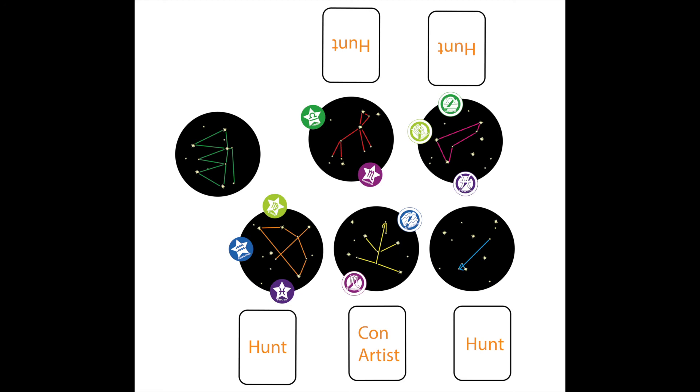Because the head astronomer and Con Artist are on the same team, it is in the head astronomer's best interest to select a topic and draw a constellation that the Con Artist can correctly interpret. The role of head astronomer rotates each round and the first players to reach five points win the game.